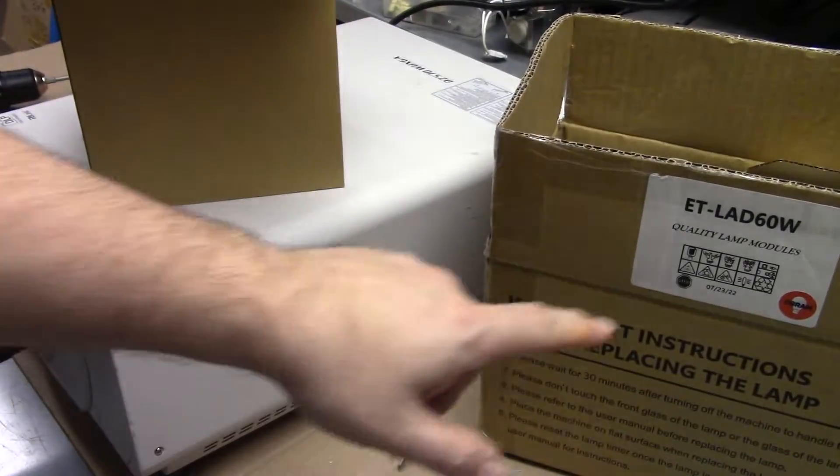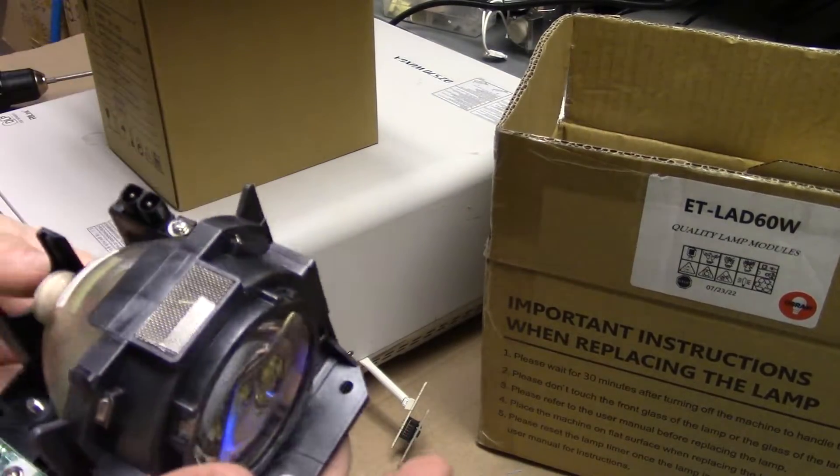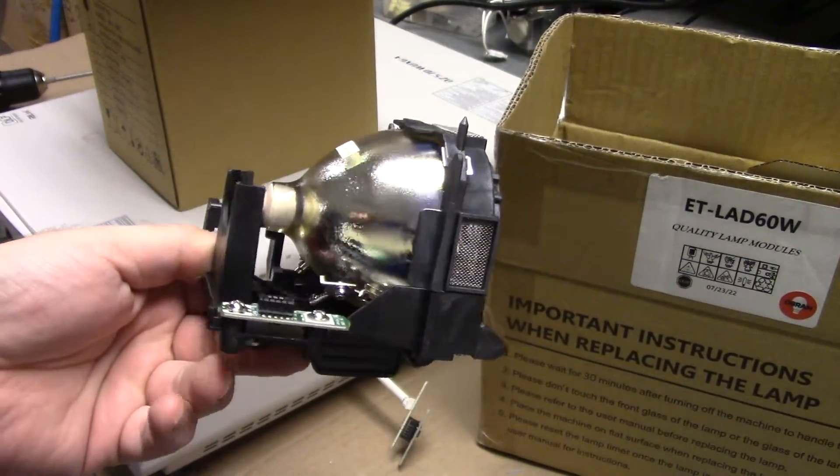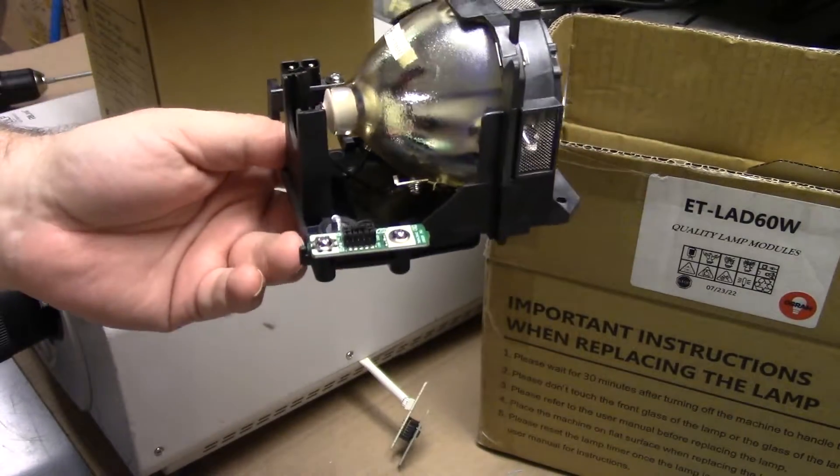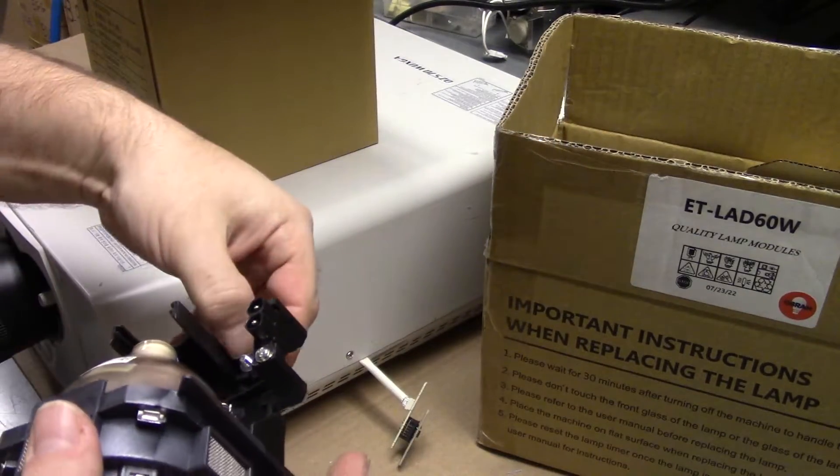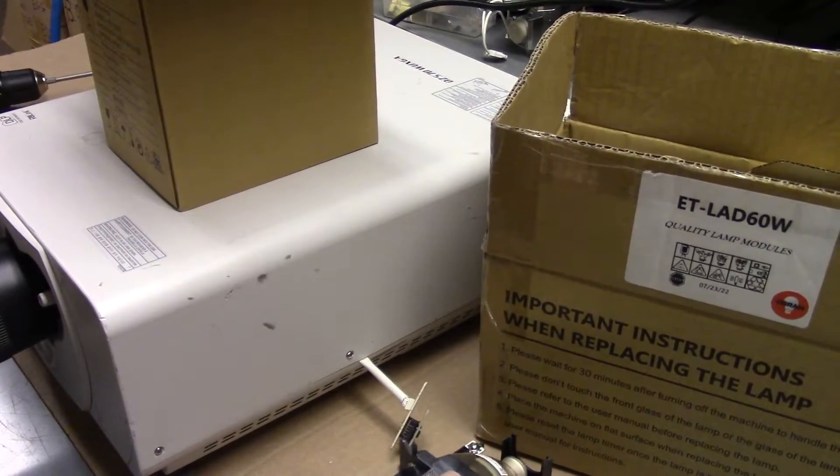Now these are ETL-AD60W's that are used in a bunch of Panasonic projectors. They have a timer module on them and occasionally I get complaints that the timer is not showing up right or the projector shuts down because of a timer.